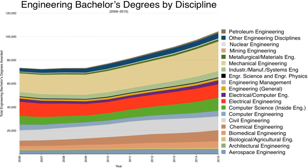The professional qualification of HKU engineering graduates is mutually recognized by most countries, such as the United States, Australia, Canada, Japan, Korea, New Zealand, Singapore, and South Africa. Applicants with other local, international, or national qualifications such as GCE A-level, International Baccalaureate (IB), or SAT can apply through the non-JUPAS route.